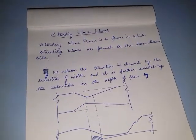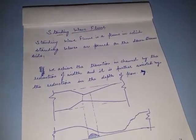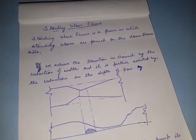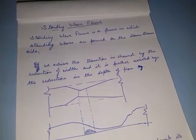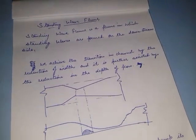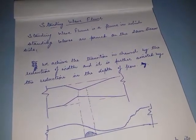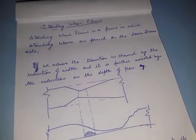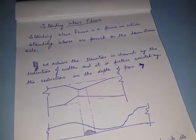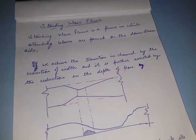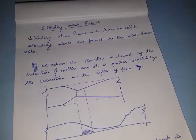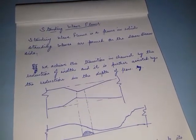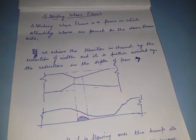Good morning everyone. Today we are going to discuss the topic standing wave flume. Basically, standing wave flume is a flume in which standing waves are formed on the downstream side. Or simply we can say that on the downstream side the level of the water rises up or stands up. In simple language, it is nothing but a hydraulic jump. The flume in which on the downstream side the hydraulic jump forms is known as standing wave flume.